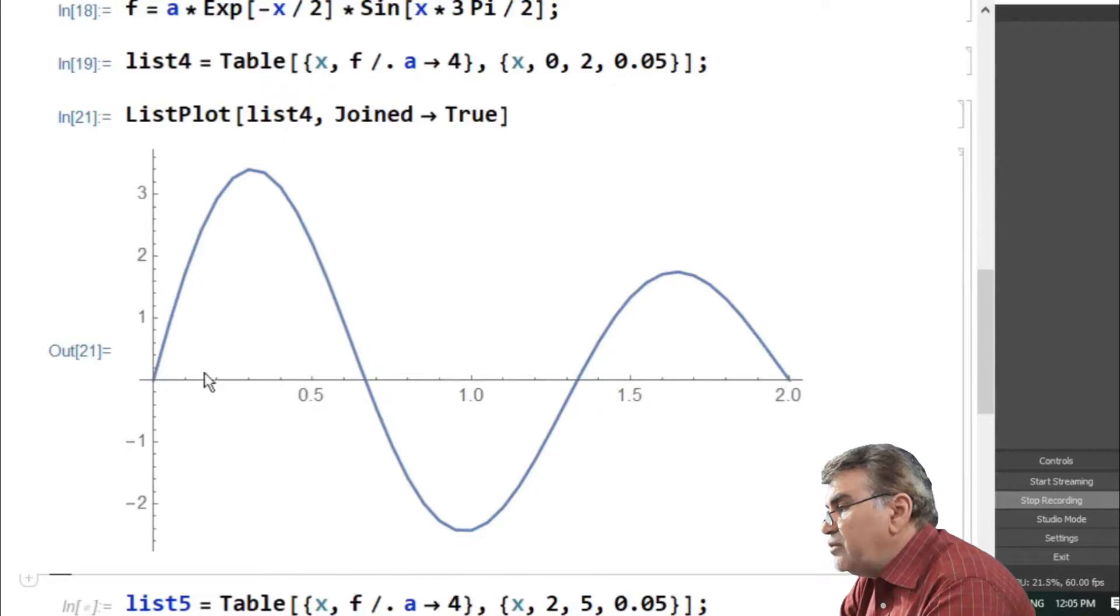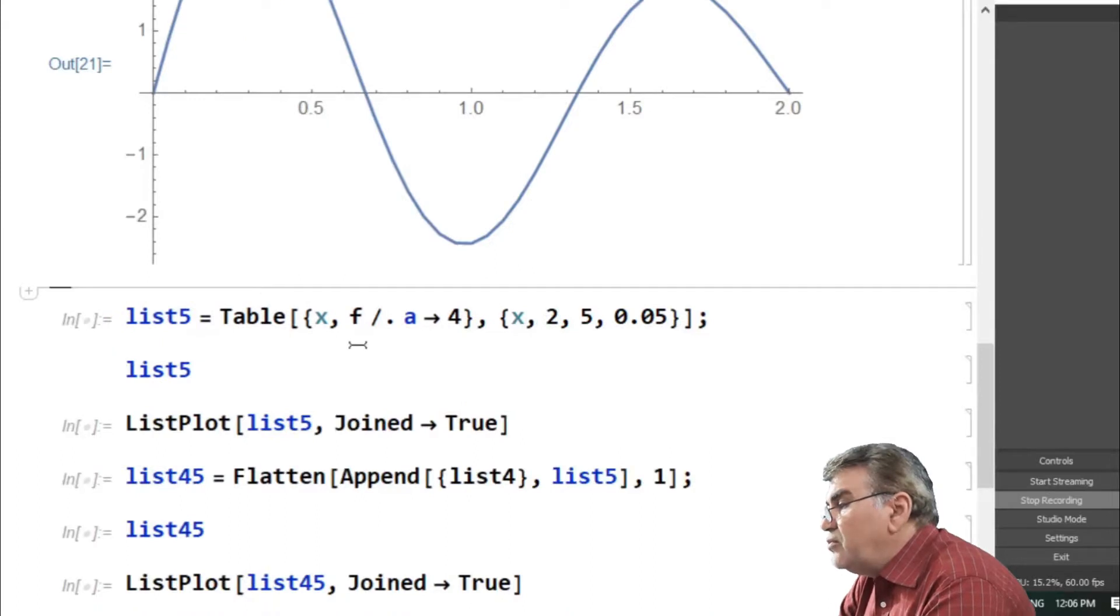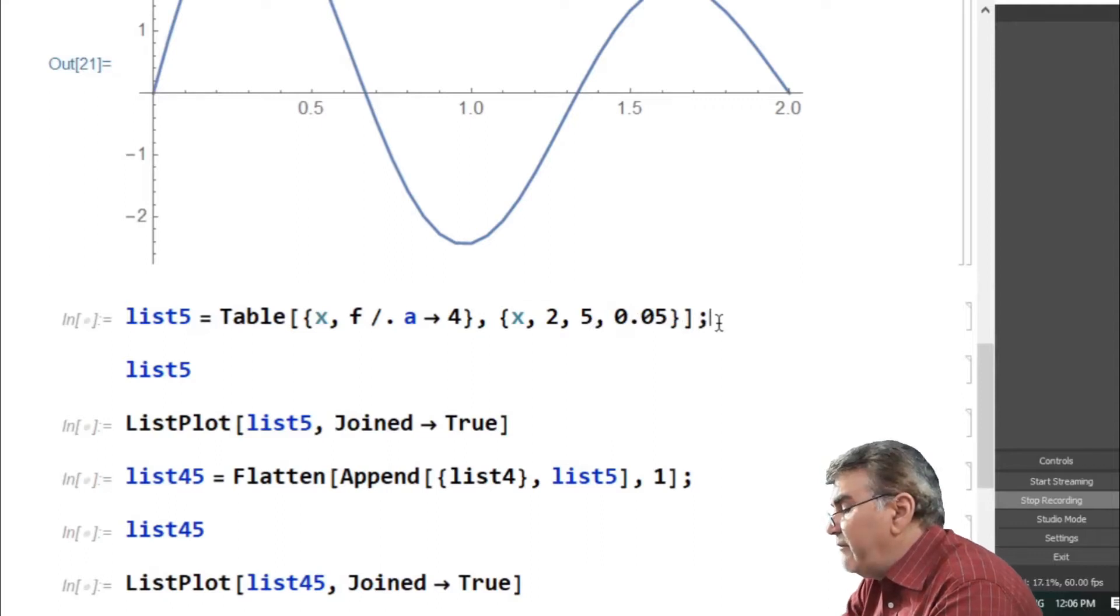Now I want to plot the same function for x varying from 2 to 5 with the same increment value of 0.05. If I run this out and again I plot...